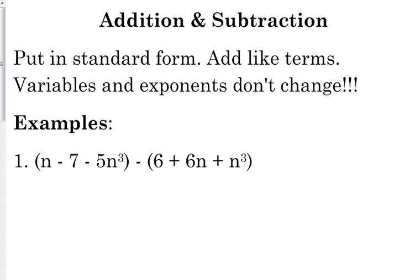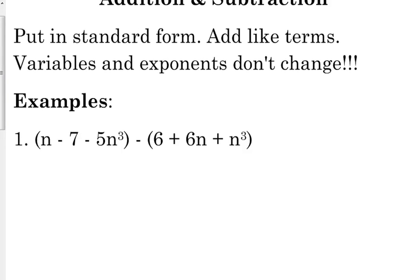So if I'm given this problem, here's what I think is the best way to organize it. I'm going to take that first expression in parentheses right here, and I'm going to write it in standard form. Meaning, my highest exponent is cubed, so this term, I'm going to write it first: negative 5n cubed.